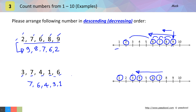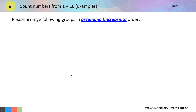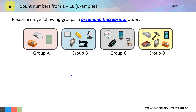Let us explore a few more examples. In this example there are a few objects in four different groups and we need to arrange these groups in ascending order. Let us count the number of objects in each group. In group A we have one, two, and three — three objects.